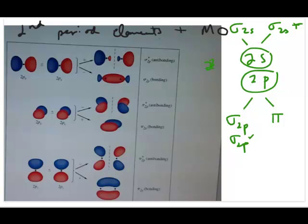there's two sigma, one bonding, one anti-bonding. And then the pi, there's the pi 2p and pi 2p star. And there's two of each one of them.